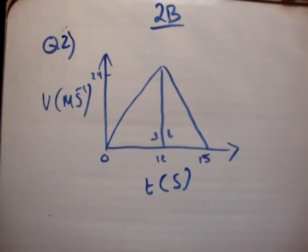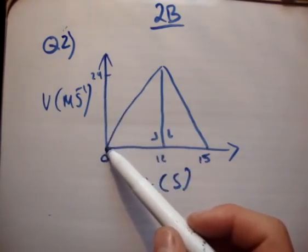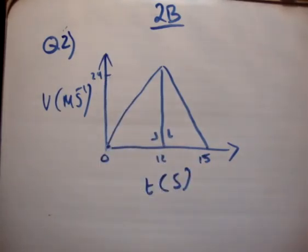I've drawn this first straight line because the car accelerates from rest. If it starts at rest, t = 0, its velocity is also equal to 0, so it starts here. After 12 seconds, we're told it has a velocity of 24. Because the acceleration is constant, you can connect them by a straight line.